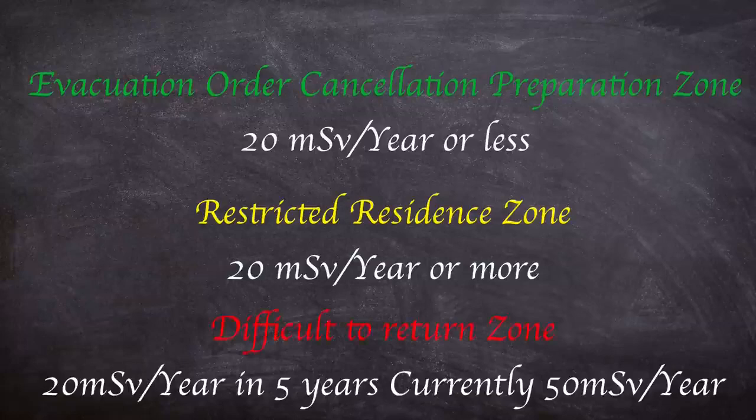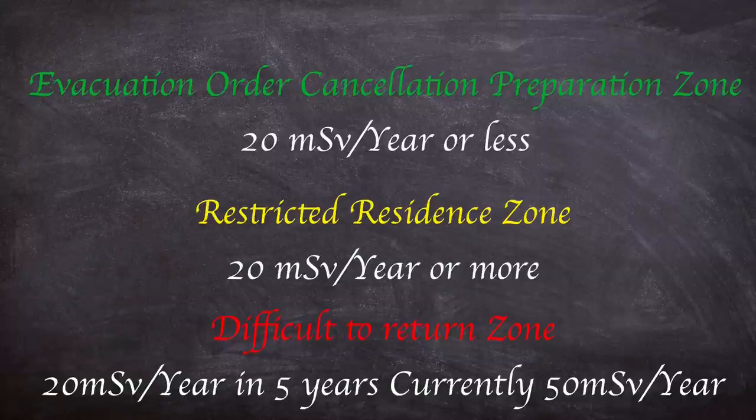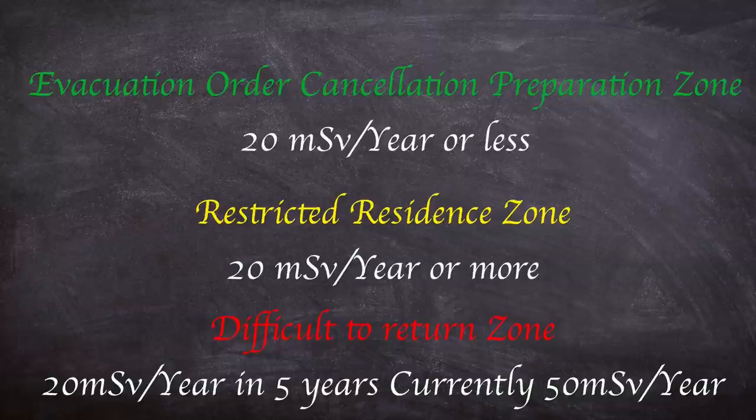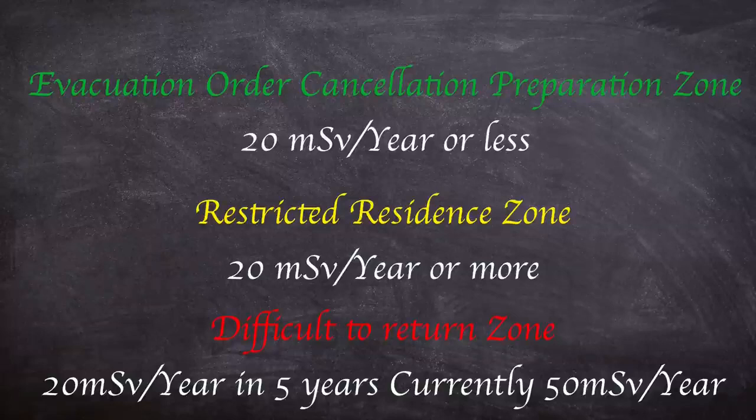Area 3, the Difficult to Return Zone is where it is expected that residents will not be returning home for a long time. These are the most restrictive areas and entry is prohibited unless specifically allowed to and whilst in protective clothing. The annual dose of radiation in these areas is expected to be 20 millisieverts a year or more within five years and the current integral dose of radiation per year is 50 millisieverts a year or more.